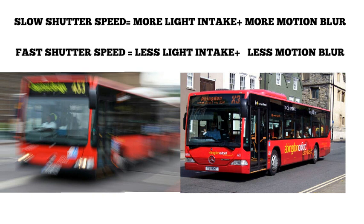Now, let's take a photo of a moving vehicle. With a shutter speed of 1 second, the image is not clearly visible — the vehicle appears blurred due to the slow shutter.